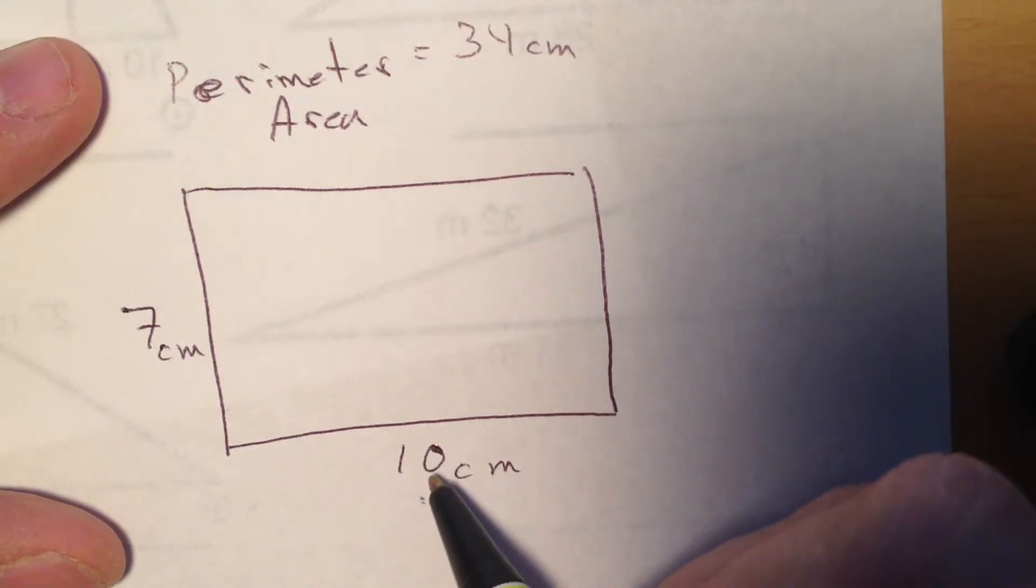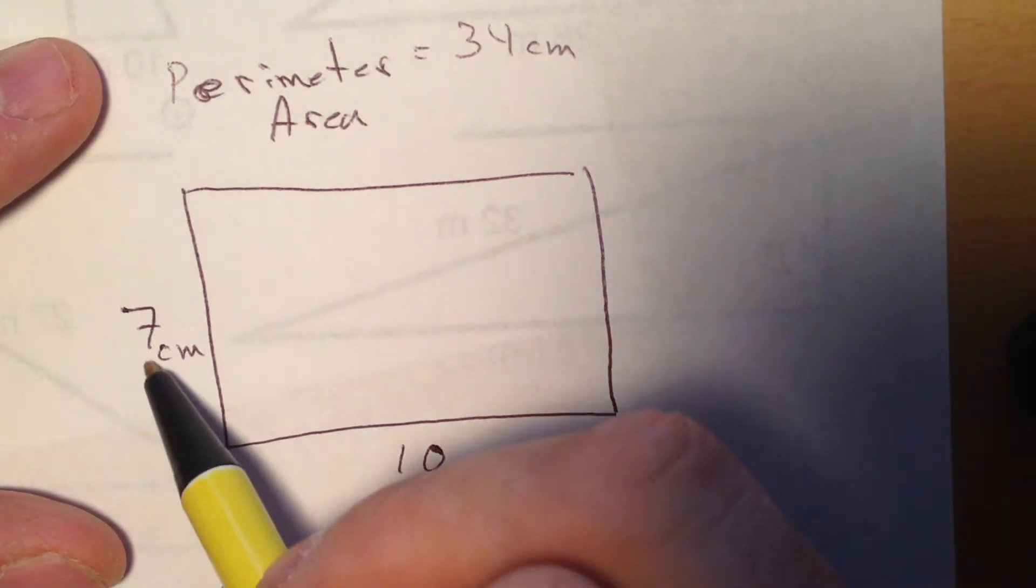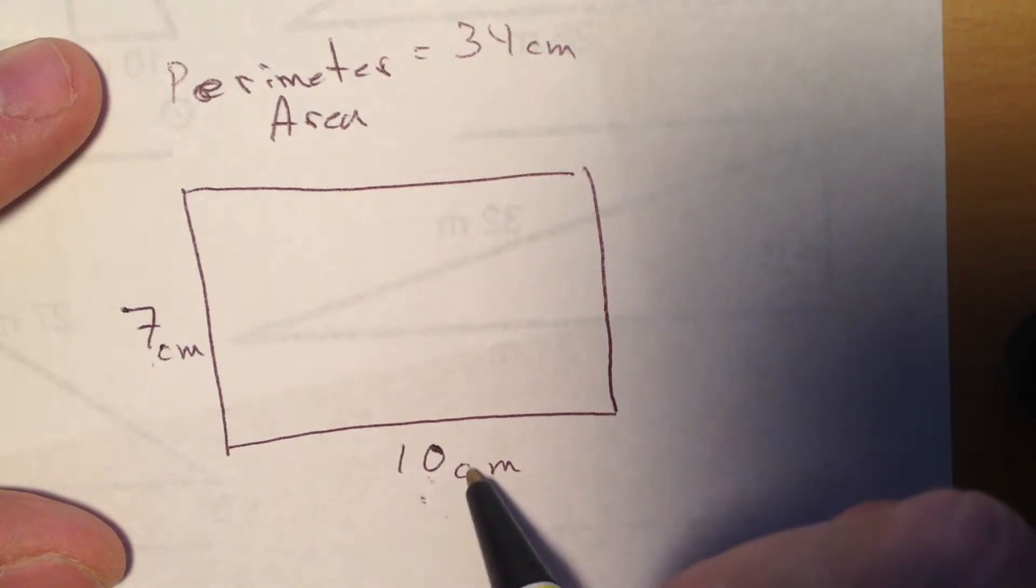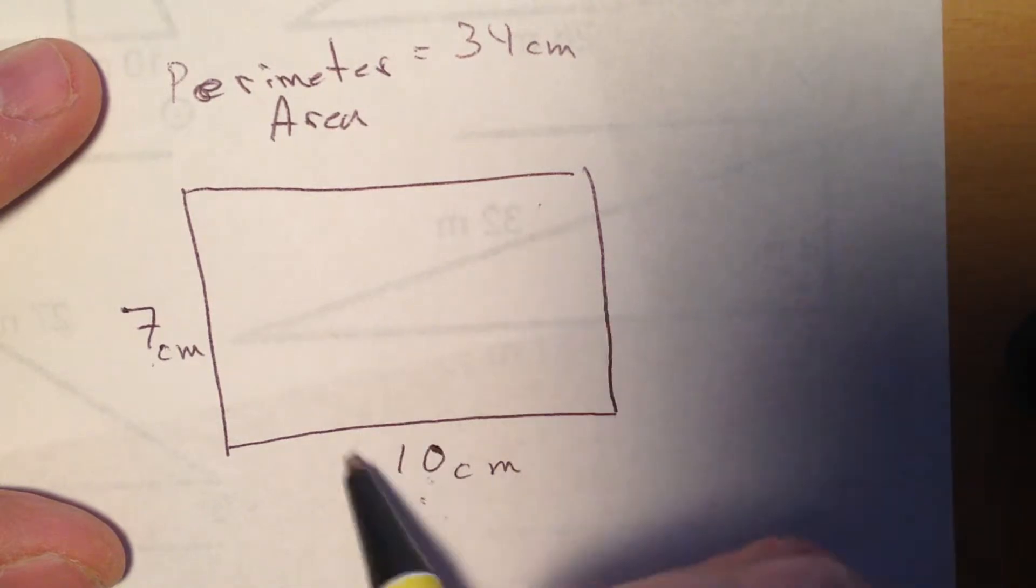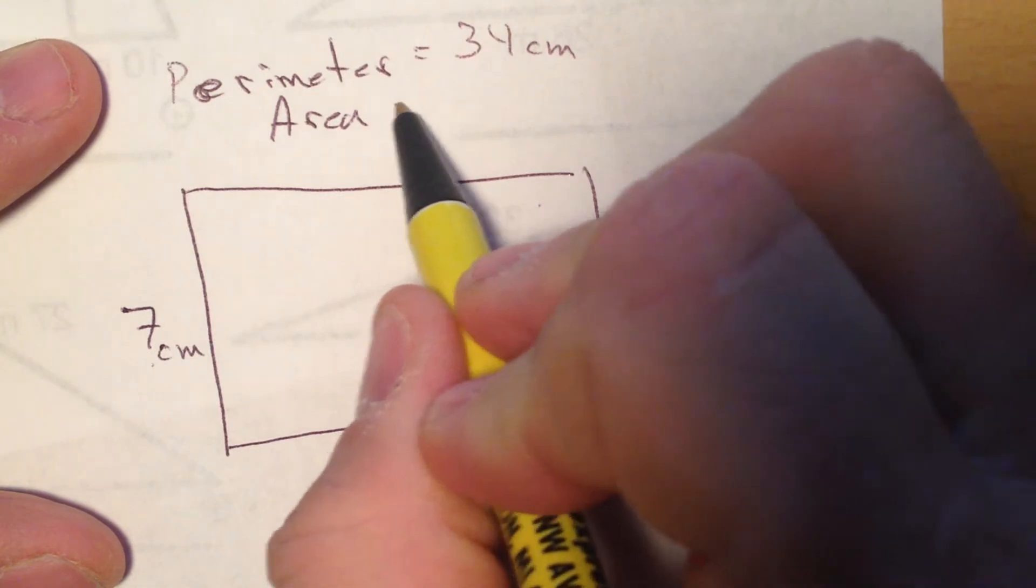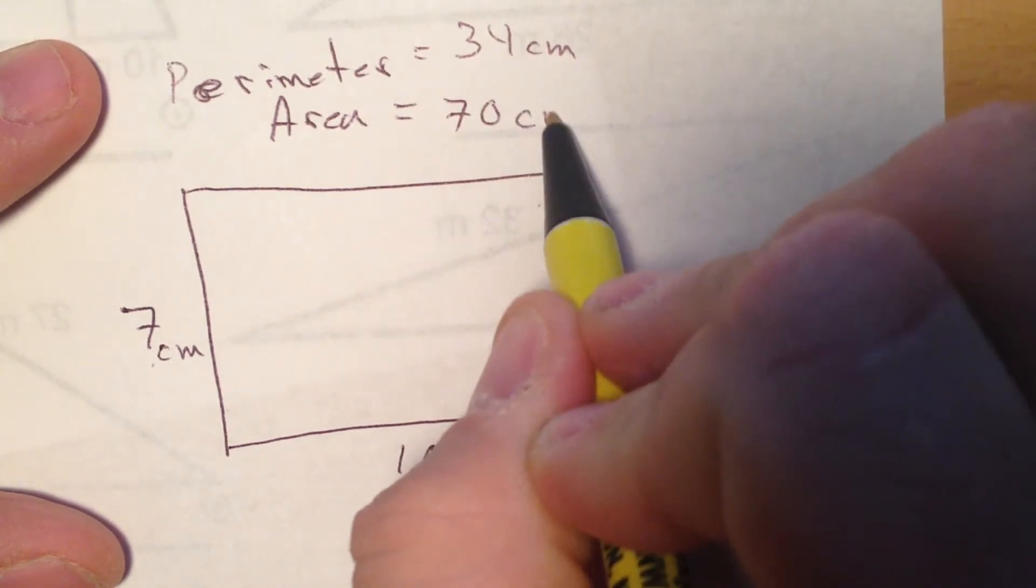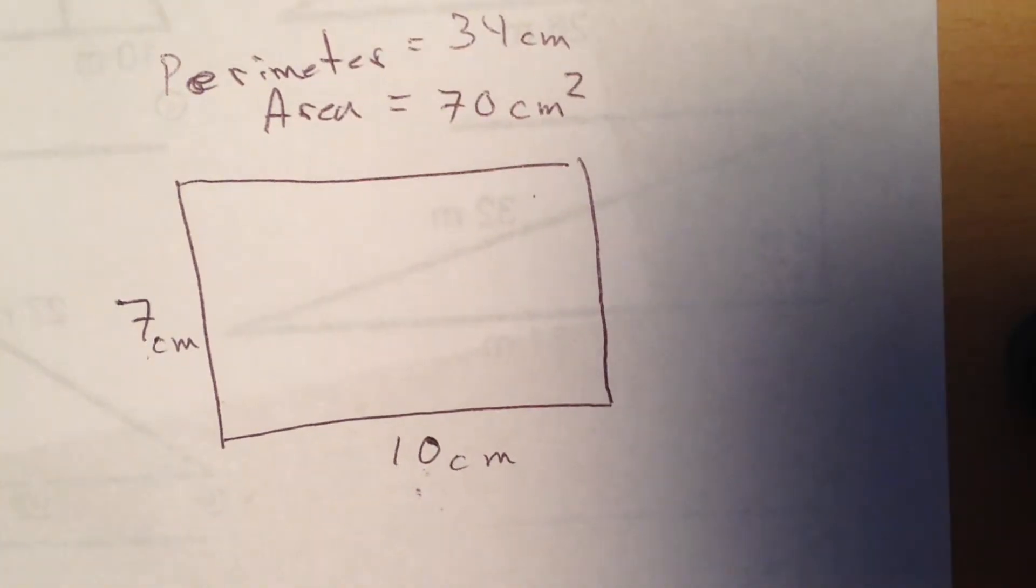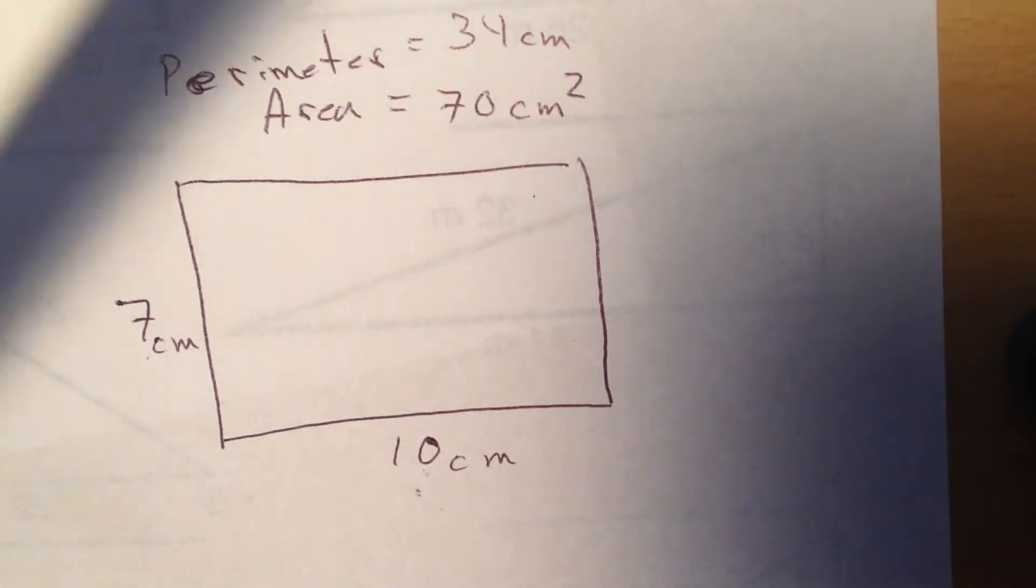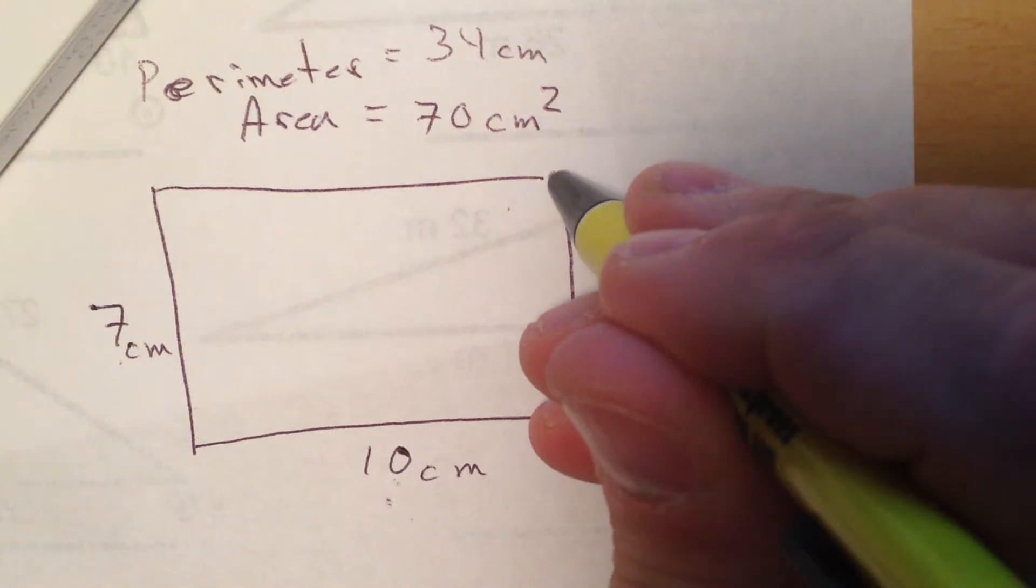Or we can multiply length times width, because it'll be 10 squares going across the bottom and they will be stacked 7 high. So 10 times 7 gives me 70. The area is 70 centimeters squared.